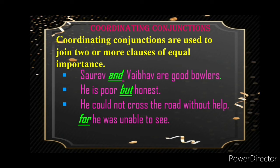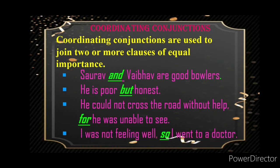He could not cross the road without help, for he was unable to see. 'For' is used to join independent clauses in which one of them is the cause of the other. I was not feeling well, so I went to a doctor. 'So' is used to join two sentences of which one shows an outcome resulting from the other. Some common coordinating conjunctions are: for, and, nor, but, or, yet, and so.